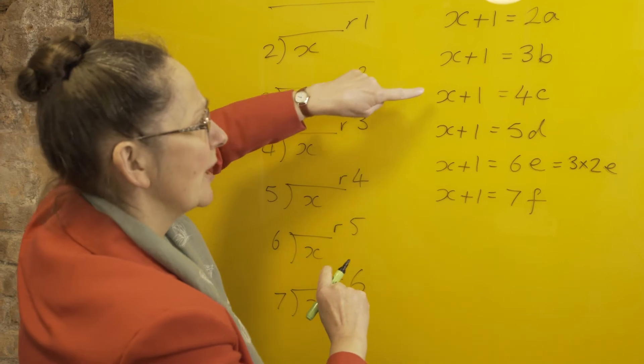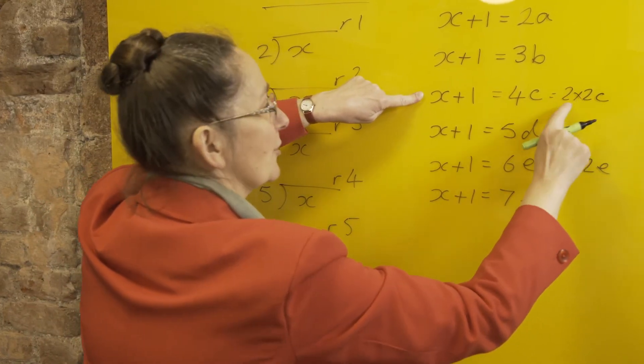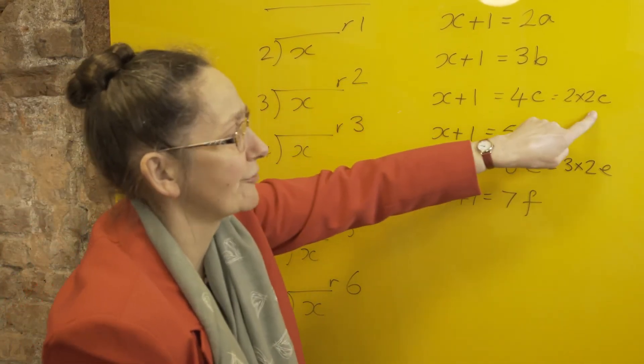What about 4? 4 is 2 times 2, so I need that 2, but I only need one more 2 in to actually make up a 4. So I'm going to need 2 as a factor twice.